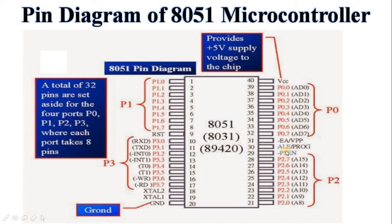Then pin number 30, that is ALE or PROG. ALE stands for address latch enable signal. The ALE signal is used to differentiate address and data in the multiplexed address/data bus. If ALE is low, the data on the bus indicates data; otherwise it represents the lower order address.